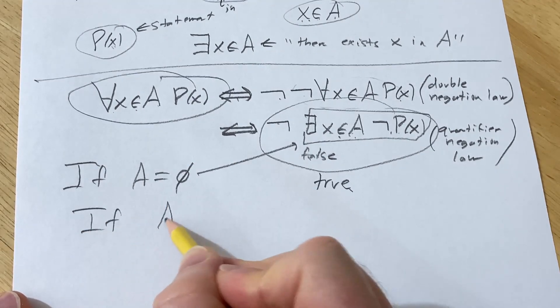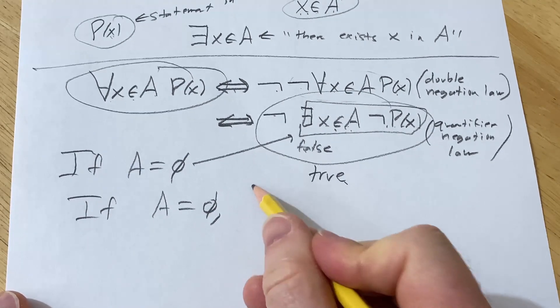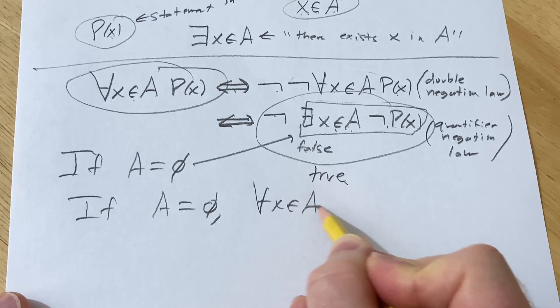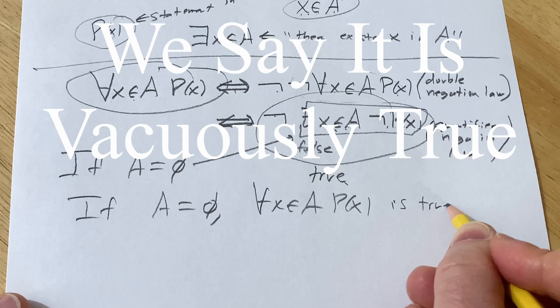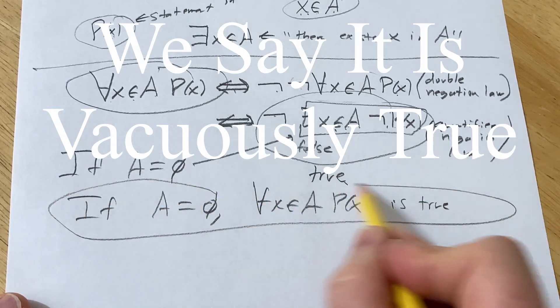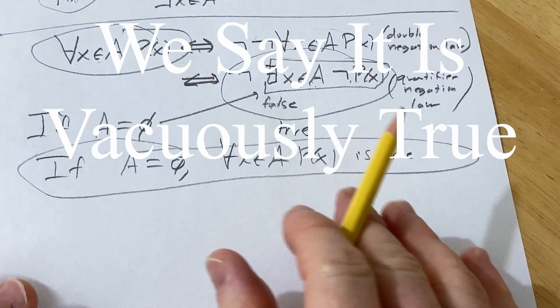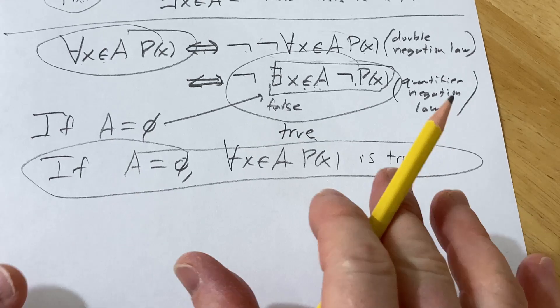So if A is empty, the statement for all X in A, P(X) is true. And that's the key, right? That's the key. That's the key behind everything in this video. And this is super key.